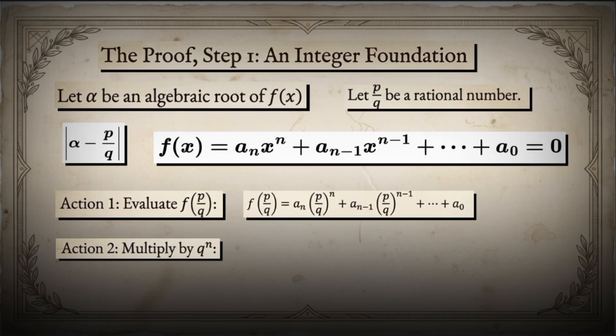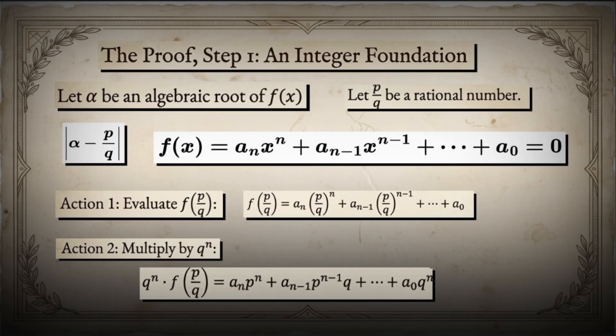Now, multiplying both sides by q to the power n gives us a sub n times p to the power n plus a sub n minus 1 times p to the power n minus 1 times q, continuing with additional terms, all the way down to a sub 0 times q to the power n. The right side is a non-zero integer, since p over q is not equal to alpha. This is crucial.